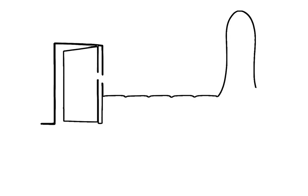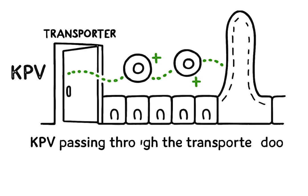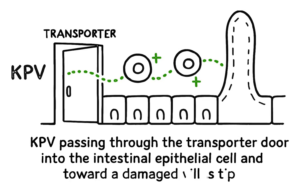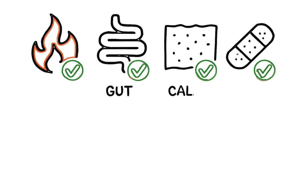Perhaps the most elegant part is how KPV gets to where it's needed most. Your gut has a special transporter that acts like a doorway for small peptides. During inflammation, this doorway opens even wider. KPV uses it to go directly into the damaged gut lining, delivering help precisely to the cells that need it.